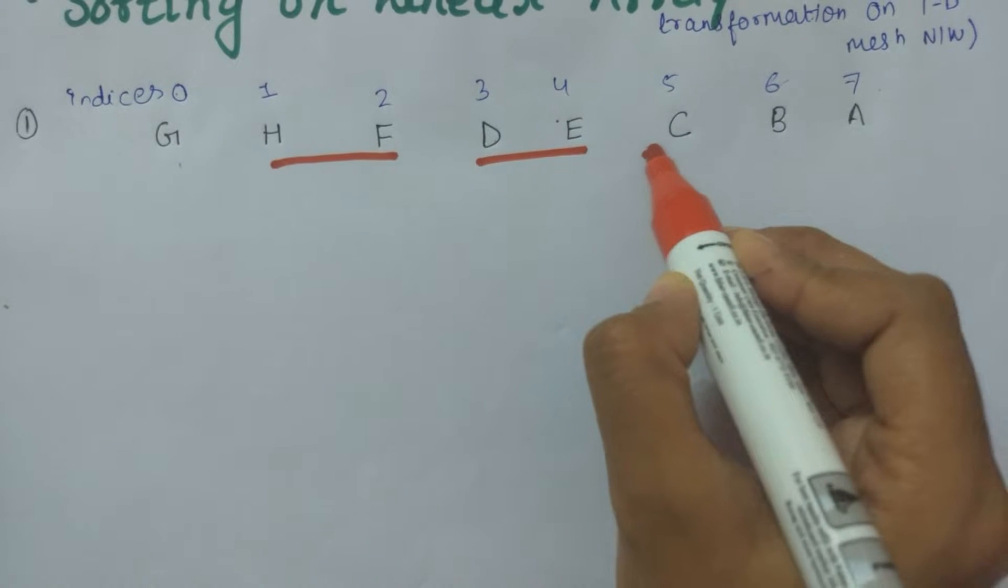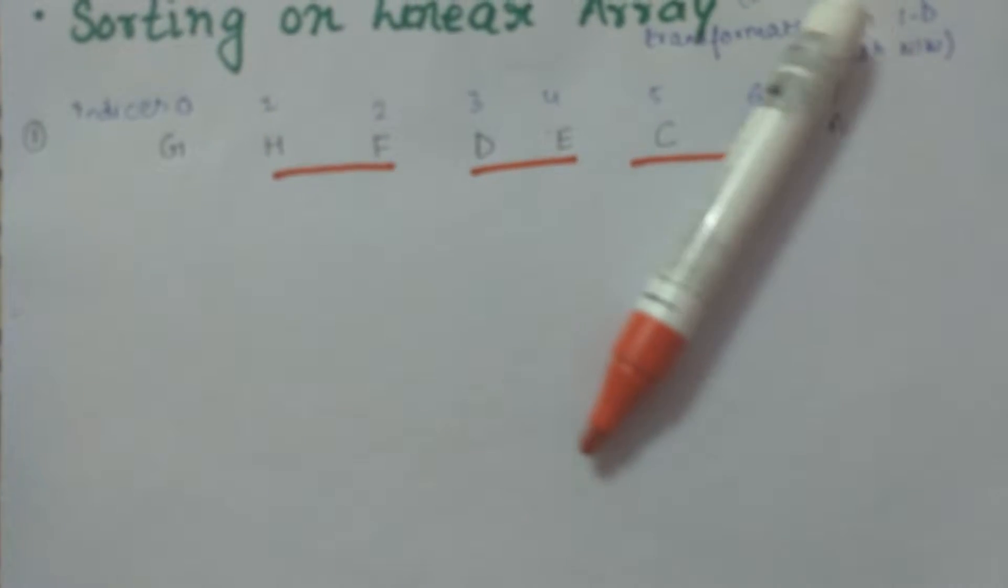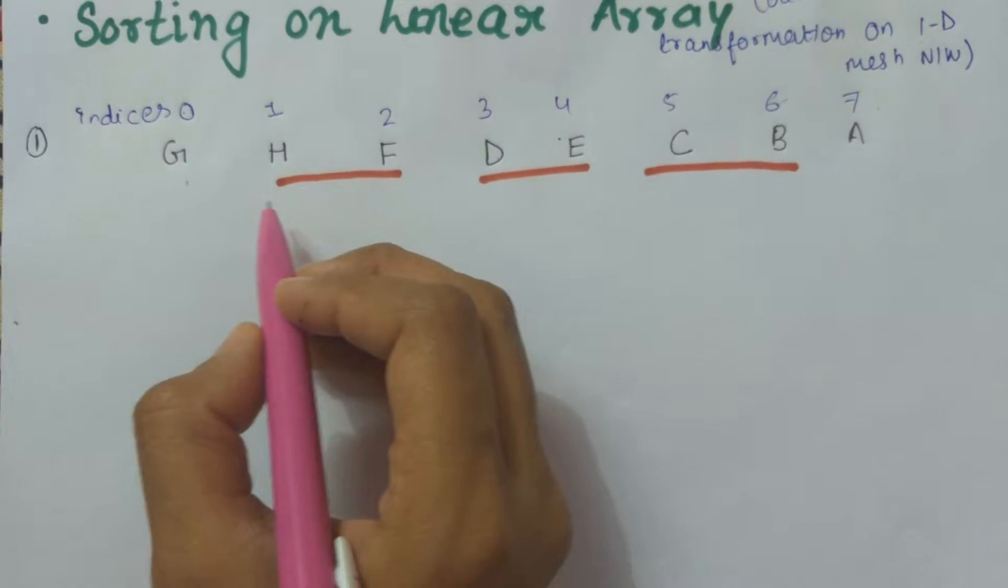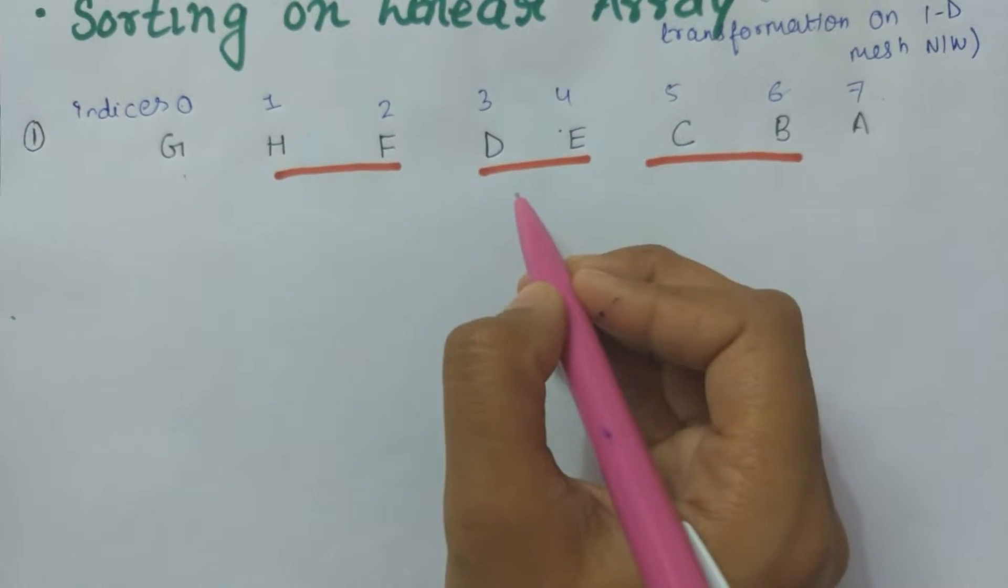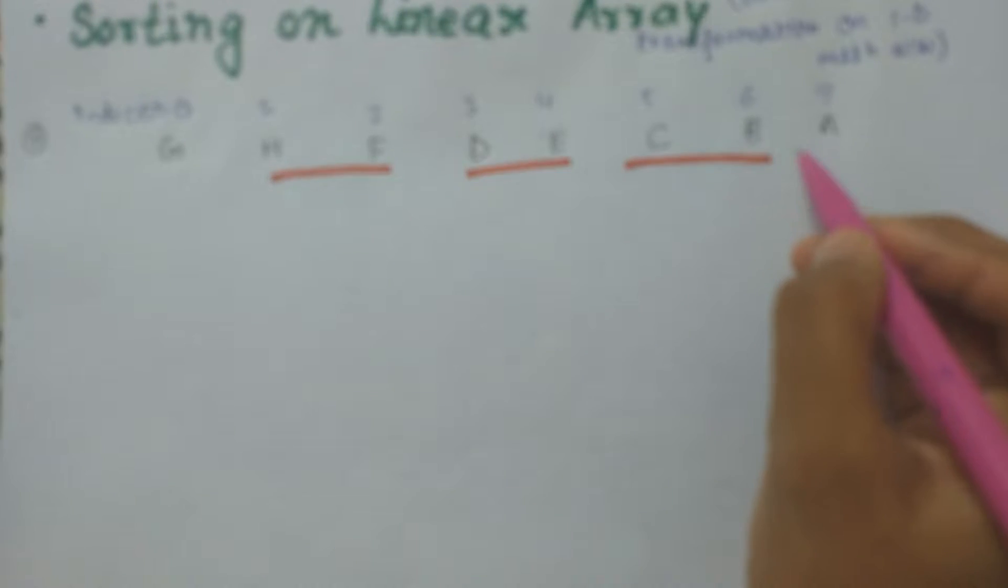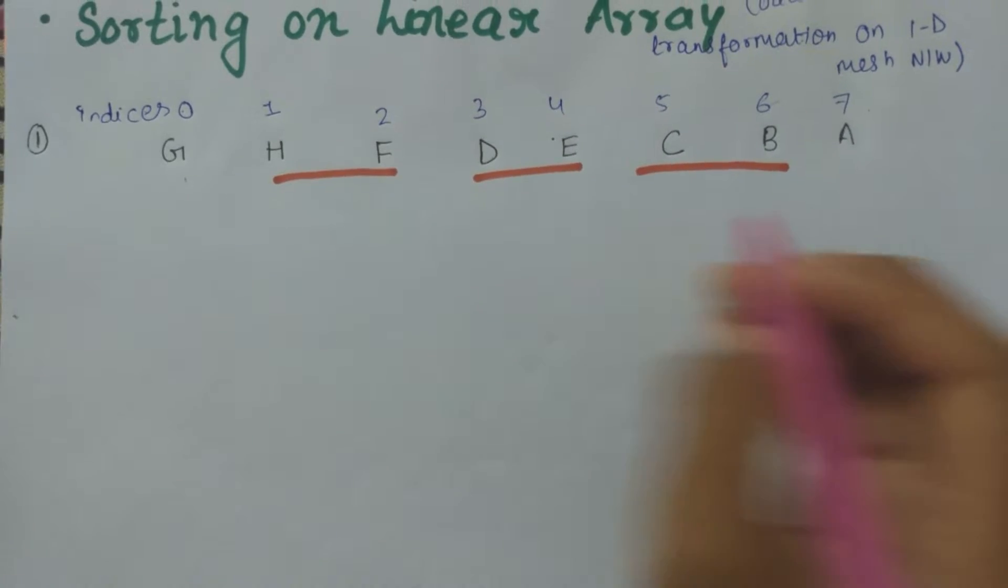Then D-E, C-B, and we'll leave the A. As we can see, H and F are not in proper order, D and E are in the same place. Now after odd-even transformation, we will write the result.